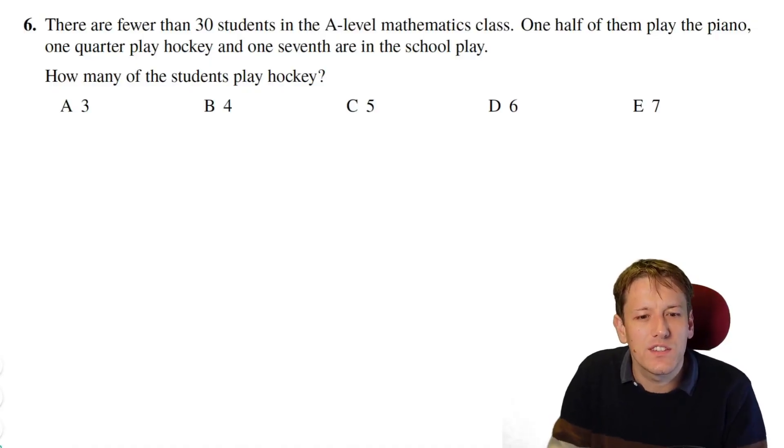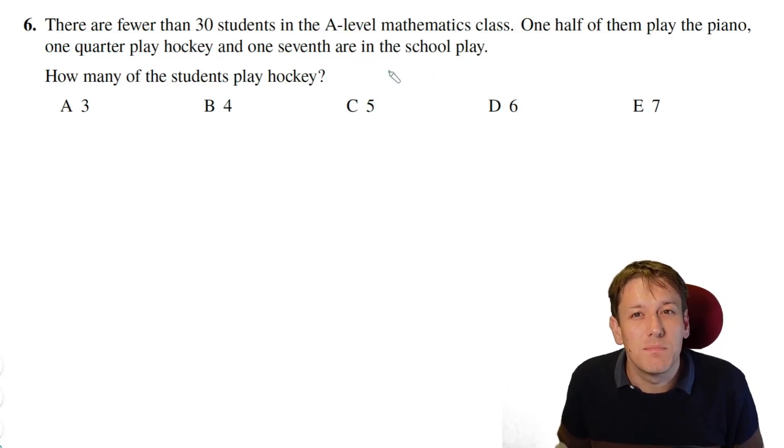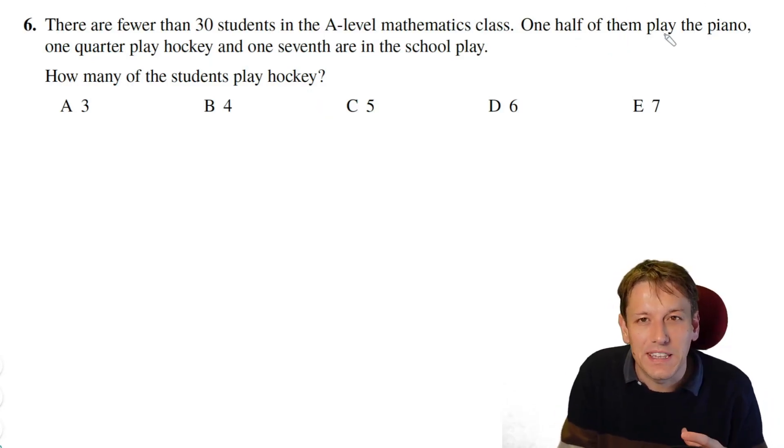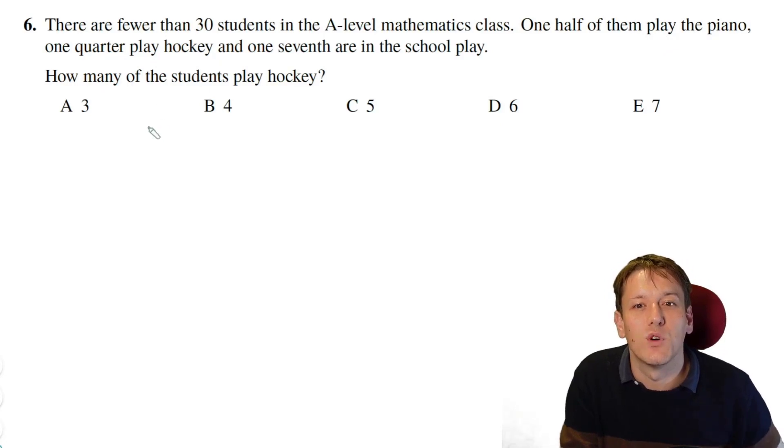Question 6 says there are fewer than 30 students in an A-level Maths class. Half of them play the piano, a quarter play hockey, and a seventh are in the school play. So the key here is to know that the number of students must be a whole number, and that means that if I can have a seventh of them, the number must be a multiple of seven. If I can have a half of them playing the piano, then it must be a multiple of two, and if a quarter of them play hockey, there must be a multiple of four.